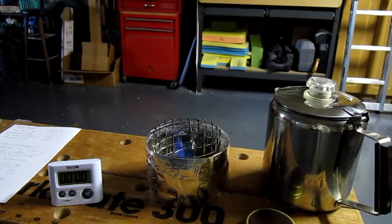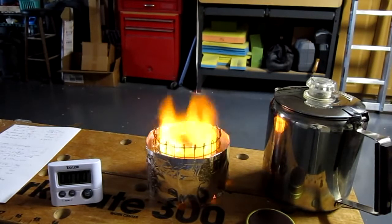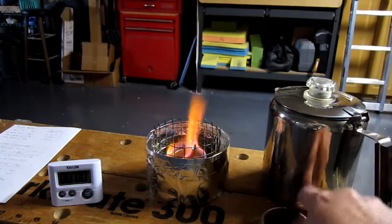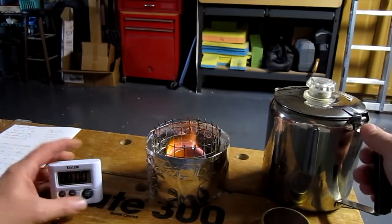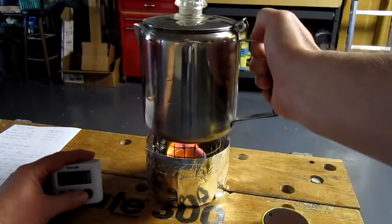See if we get consistent results. That's pretty good. I mean, 4 minutes, 13 seconds for 16 ounces. That's not bad considering the inefficiencies of the pot. All right, we've got a blossom. Let me get ready here.